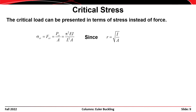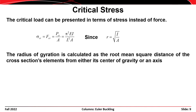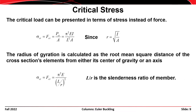This buckling load P_critical can also be presented as a critical stress. In steel terminology we write it as F_cr, equal to P_critical divided by A: π²EI divided by L²A. Since r = √(I/A), we can rewrite this as F_critical = π²E divided by (L/r)², where L/r is the slenderness ratio of the member.